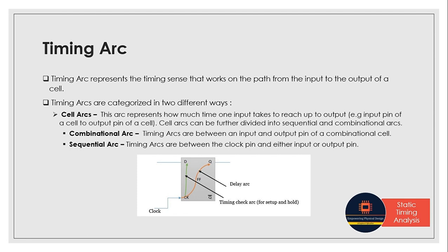Cell arcs can be further divided into combinational arcs and sequential arcs. Combinational arcs are between the input and output pin of a combinational cell — like AND, OR, and all other logical cells. They have two or three inputs, and we check each input for rising and falling transitions. Sequential arcs are between the clock pin and either input or output pin.